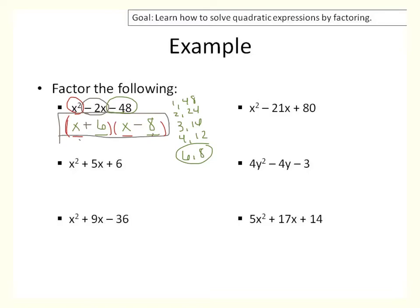If we FOIL this out, we're going to get x squared minus 8x plus 6x minus 48, and if you simplify that, it gets you back to where we started.